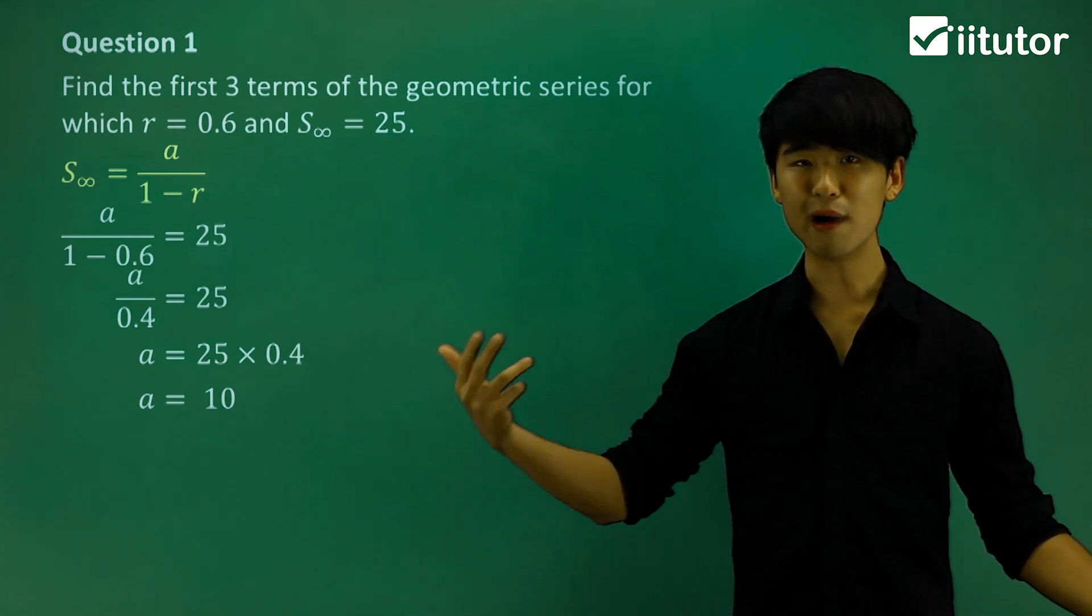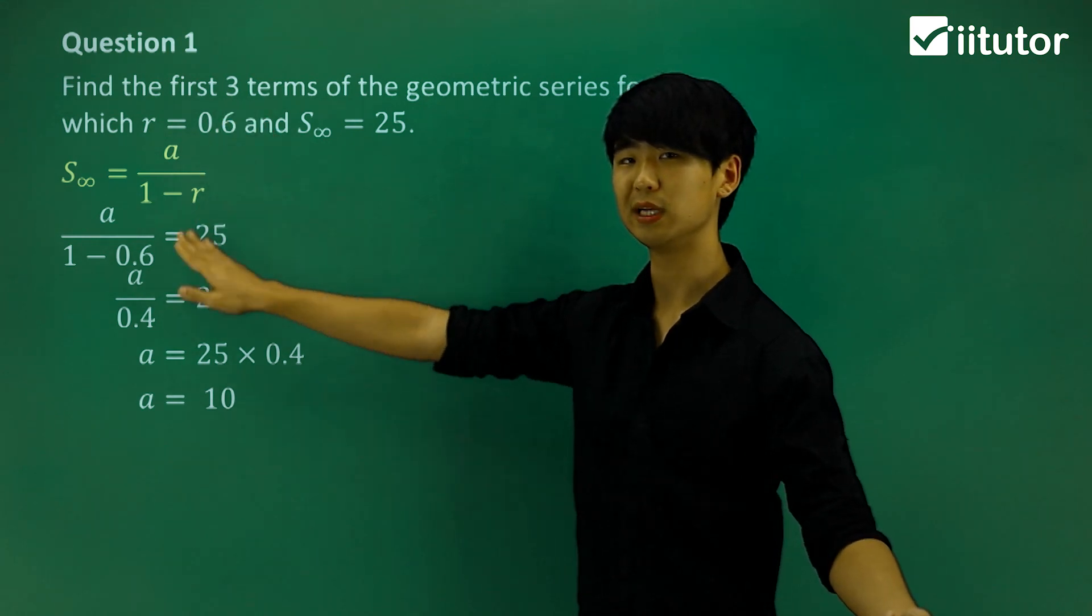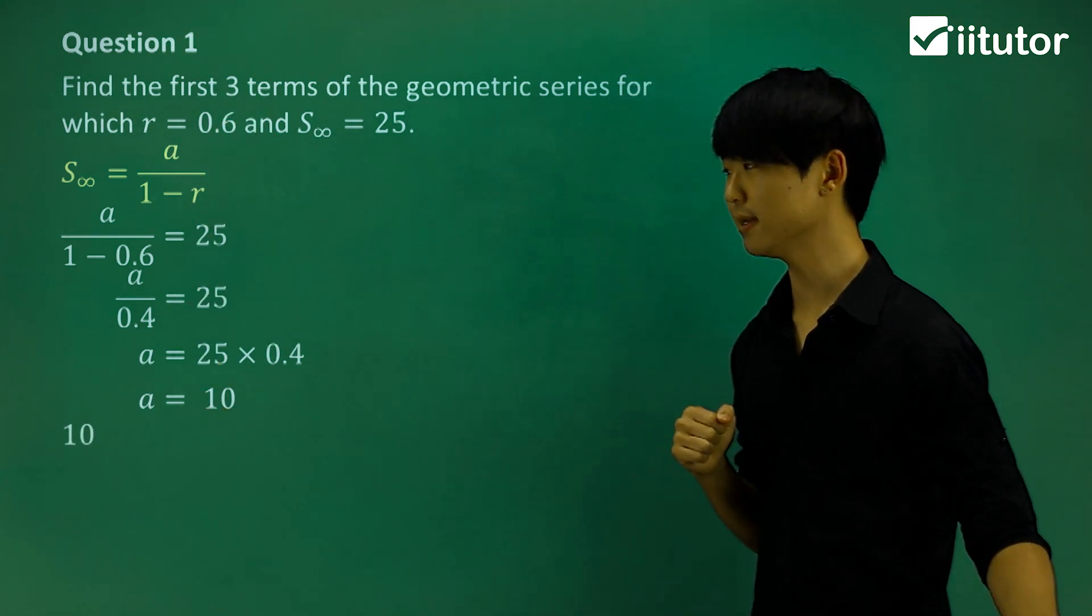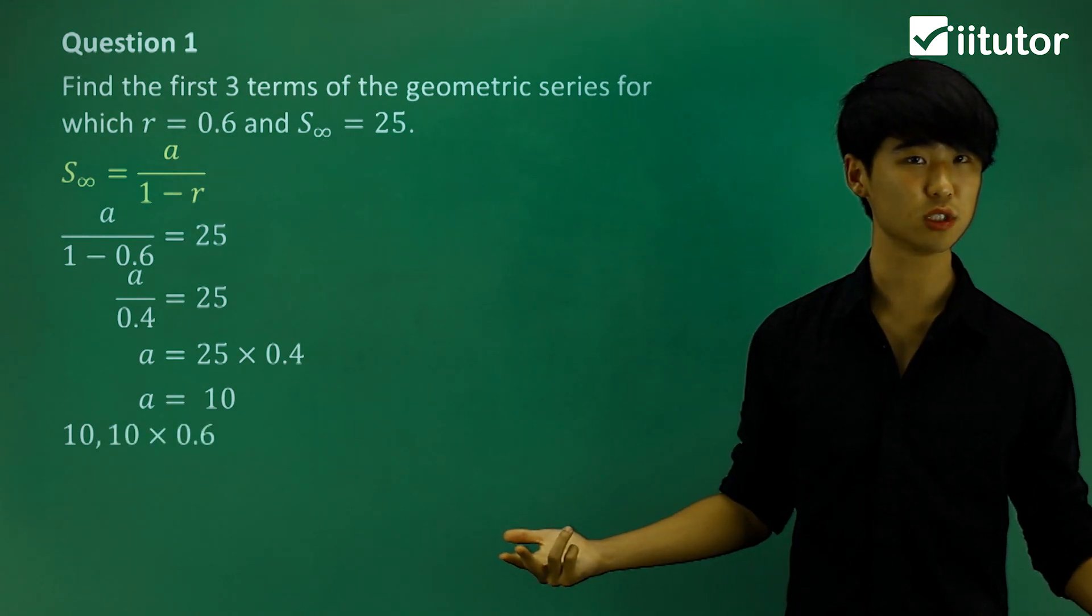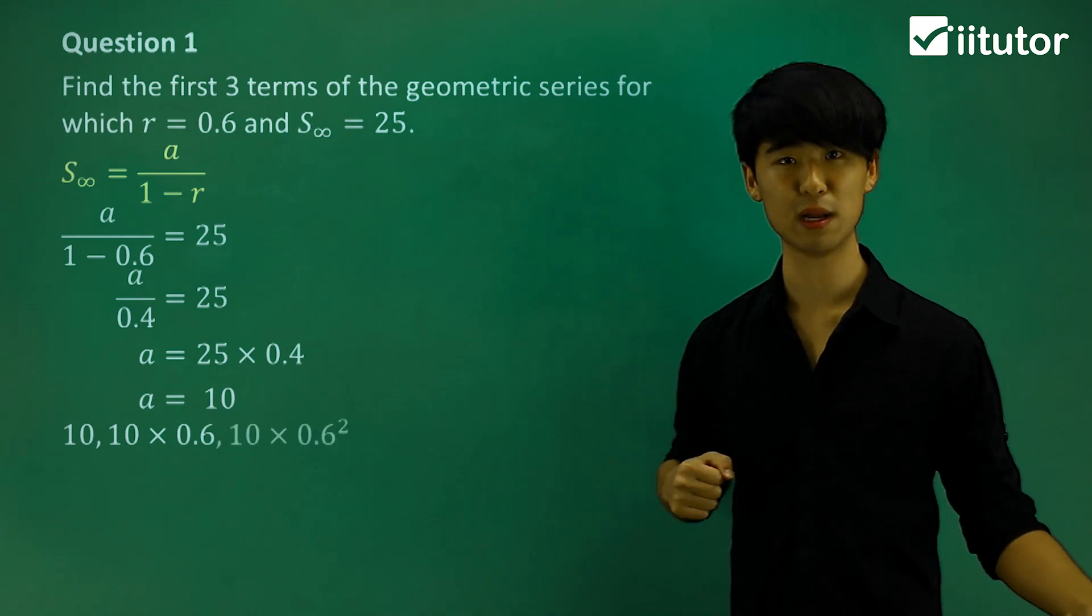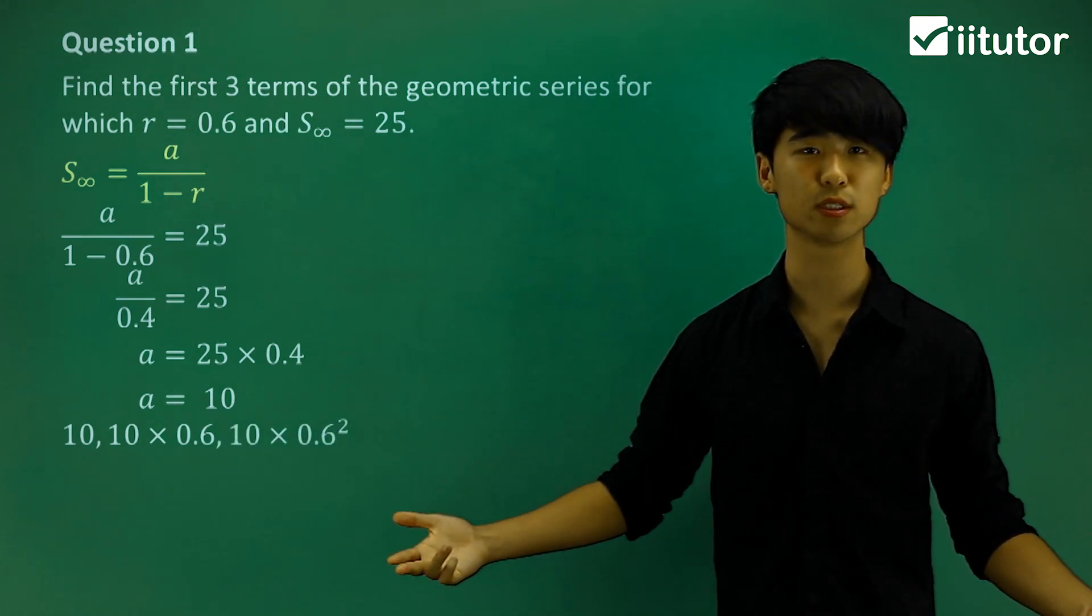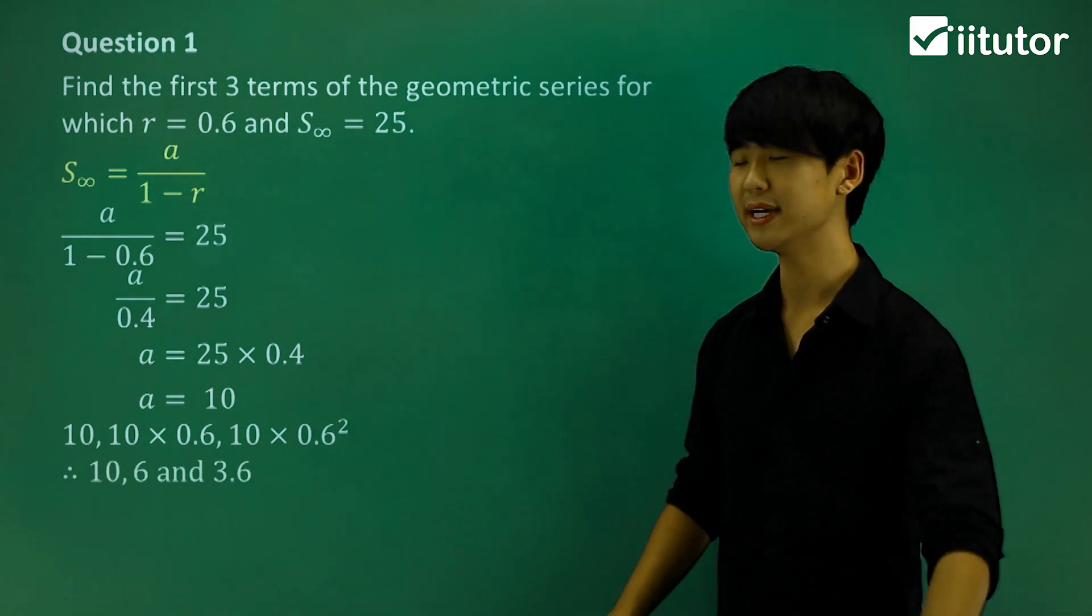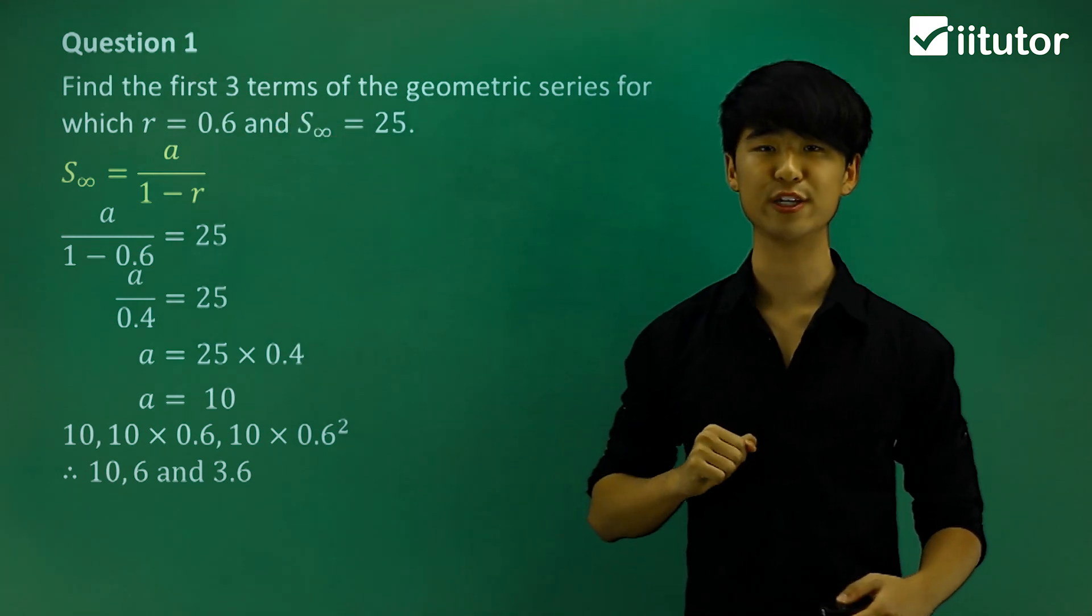My first term is 10. The next term will be 10 multiplied by the ratio, which is 0.6. The next term will be that term multiplied by 0.6 again. These will be my first three terms. Let's calculate: the answers are 10, 6, and 3.6. Those are my first three terms.